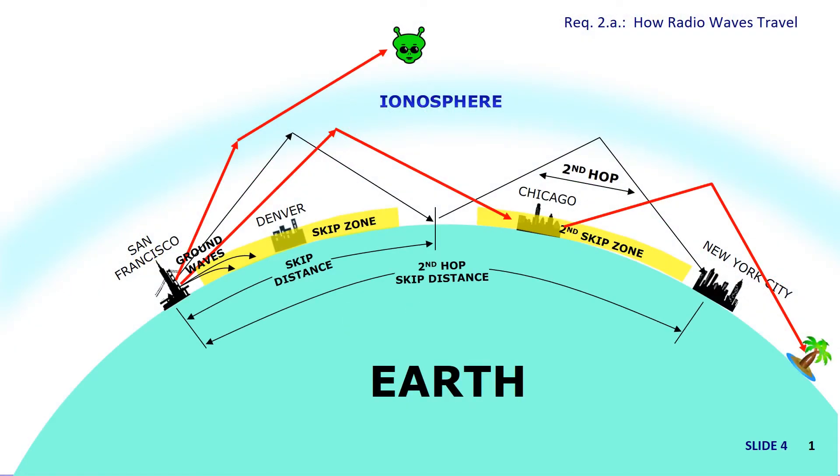Consider four cities lying along the curvature of the earth: San Francisco, Denver, Chicago, and New York City. We've already talked about line of sight radio waves and we know they pretty much can't follow the curve of the earth. Even some transmitters designed to send radio waves around the earth will throw off some ground waves that won't go very far.